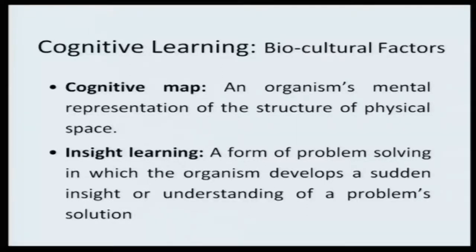Having discussed all these things, since we are on our last lecture, let us now focus on bio-cultural factors — those factors that play an extremely important role in cognitive learning. First, the cognitive map, which we have talked about before: it is basically the mental representation of the structure of physical space, how things are laid out. An example would be the route map from your house to your school or college.